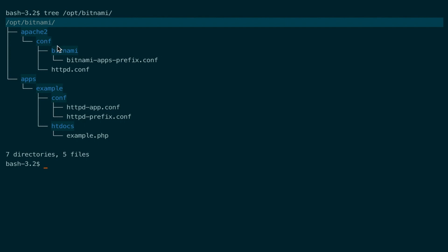Each individual Bitnami app has its own folder inside the apps folder. It has its own htdocs folder where the application files are placed, and its own conf folder where its Apache configuration files are placed.